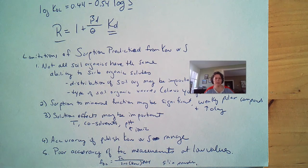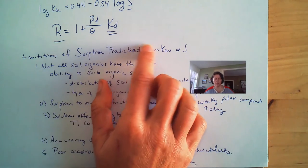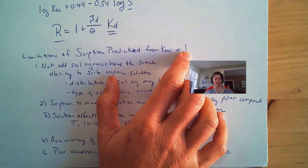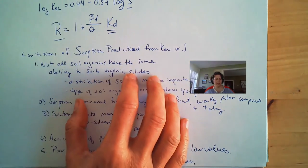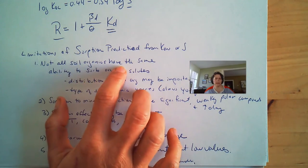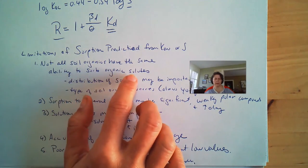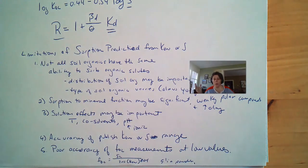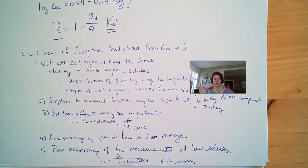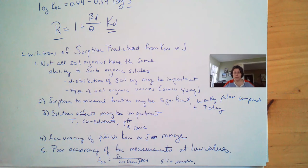So there are a lot of limitations that we've been talking about in the predictions for using the KOW or the S. What are some of the limitations?